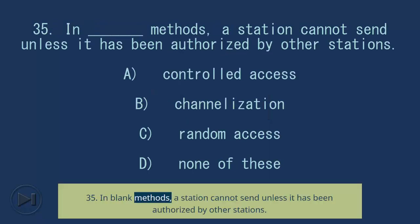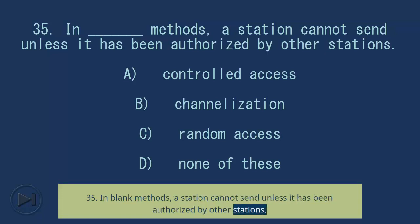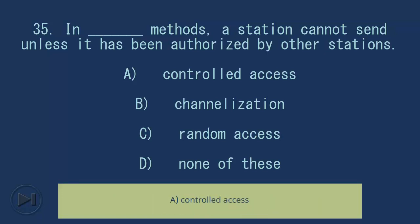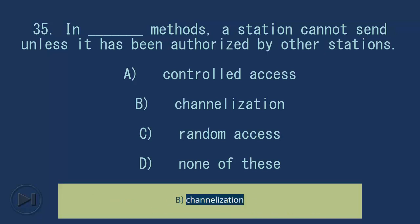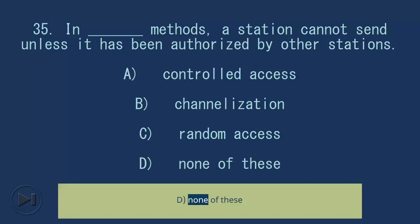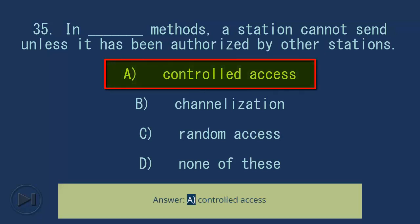Question 35: In blank methods, a station cannot send unless it has been authorized by other stations. A) Controlled Access, B) Channelization, C) Random Access, D) None of these. Answer: A) Controlled Access.